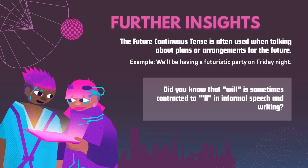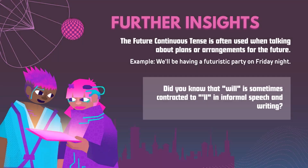Further Insights: The Future Continuous Tense is often used when talking about plans or arrangements for the future. Example: 'We'll be having a futuristic party on Friday night.' Did you know that 'will' is sometimes contracted to 'll' in informal speech and writing?